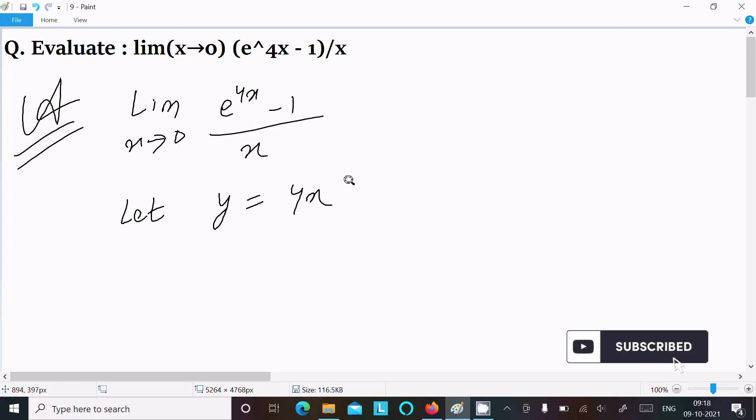Now, x tends to 0, so y also tends to 0, because y equals 4 into 0, then y also tends to 0.